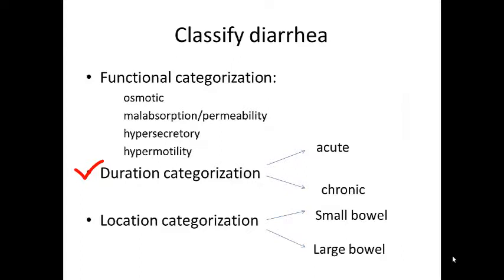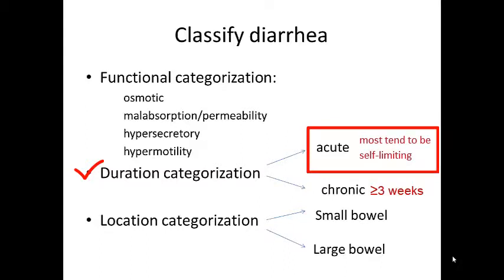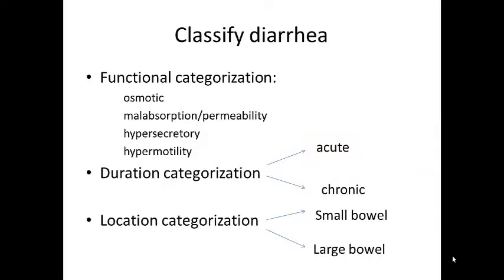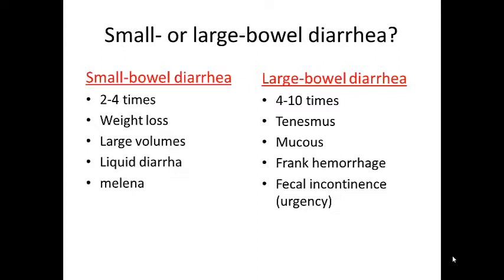What we're most used to is classifying diarrhea by how long it has been going on. If it is more than three weeks, we usually call it chronic, and that's important because in most acute cases diarrhea tends to be self-limiting — patients often get better despite what we do, not because of it. A good example would be dietary indiscretion. There is also a classification based on location: large or small bowel. Most patients tend to fall under one category, and this can really narrow the list of differential diagnoses.